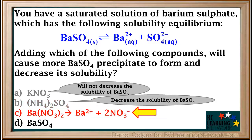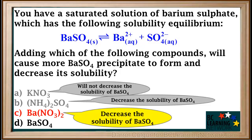Next, we'll look at barium nitrate. Like all nitrate compounds, this is highly soluble. It dissociates into barium and nitrate ions. We can see that the soluble compound, barium nitrate, and the low solubility compound, barium sulfate, have the Ba²⁺, or barium ion, in common. This means that adding soluble barium nitrate will decrease the solubility of BaSO4 and cause more BaSO4 precipitate to form.